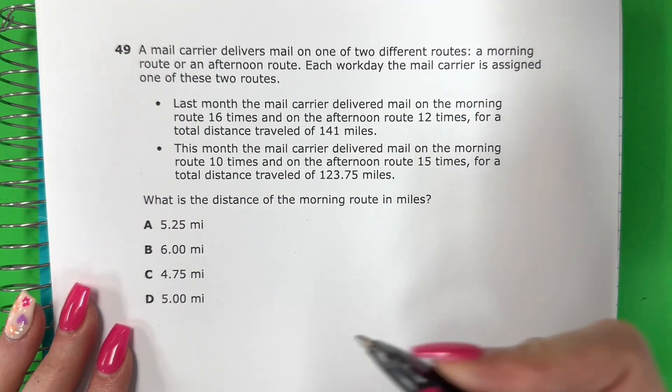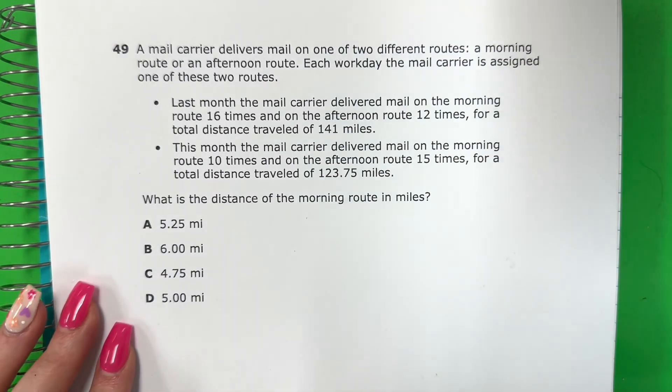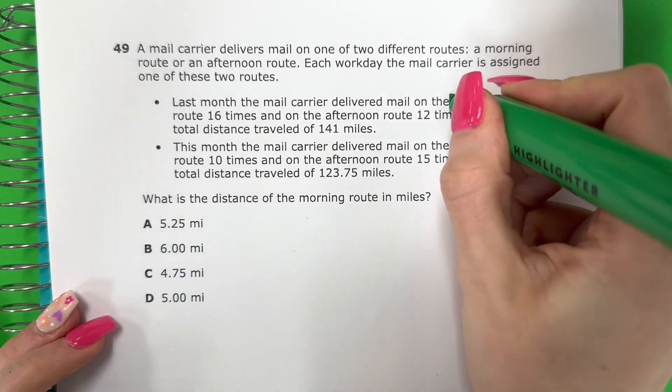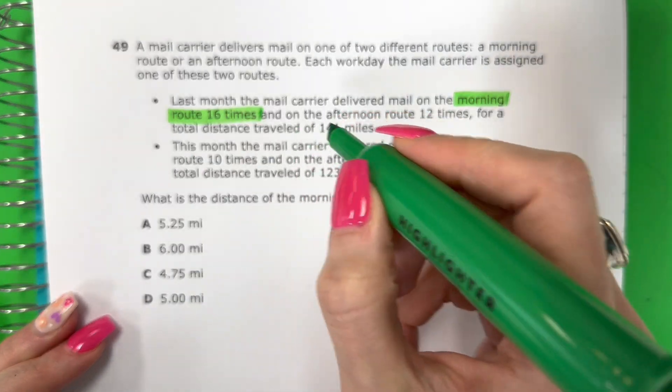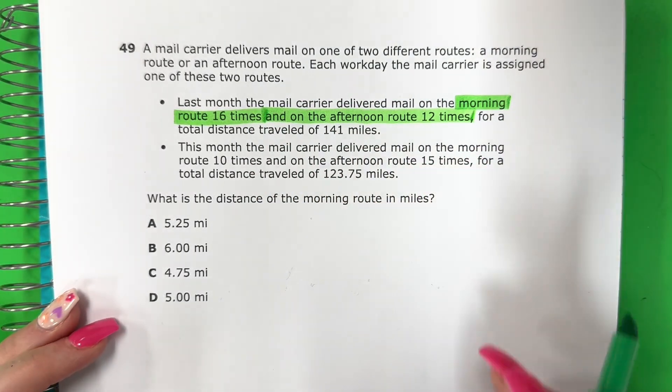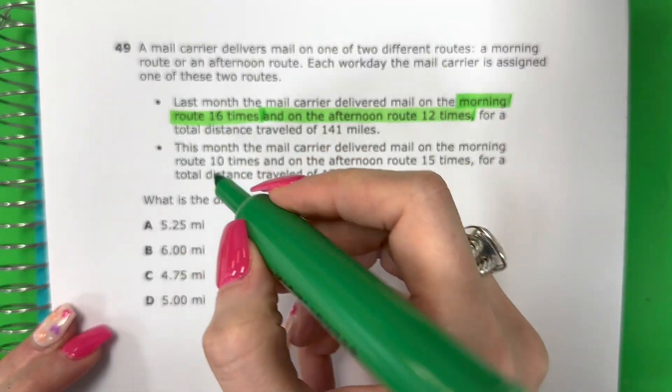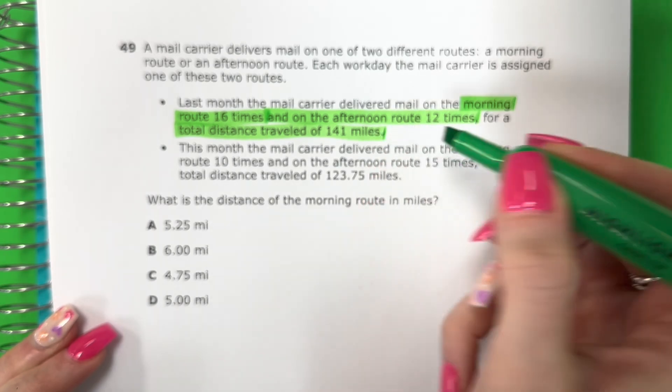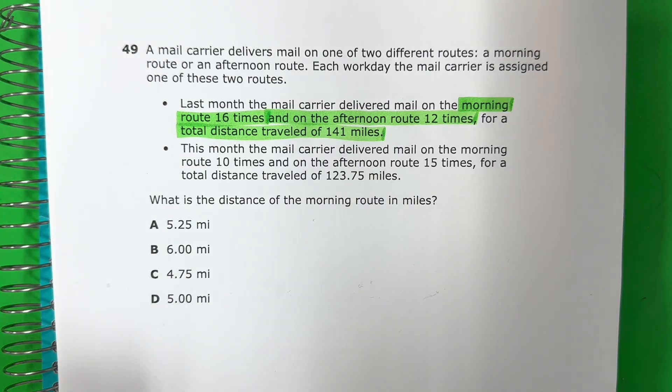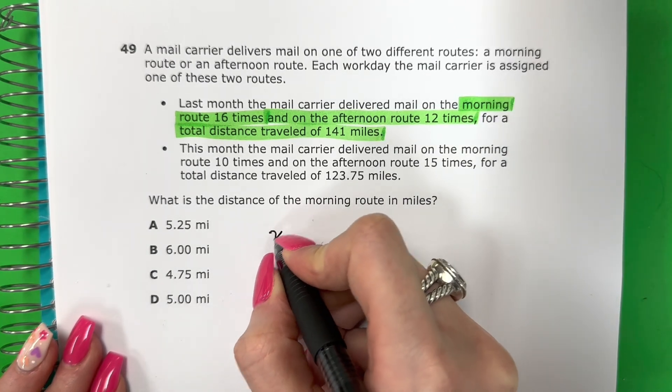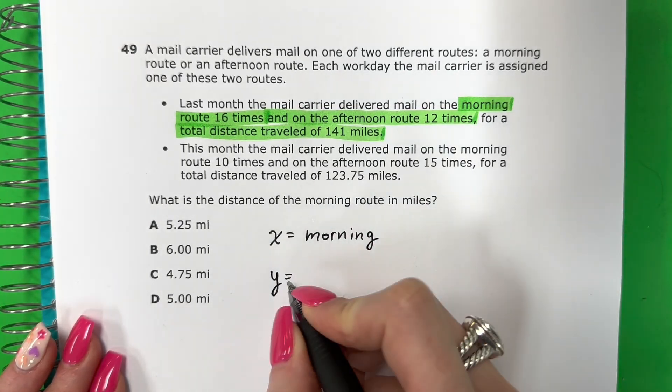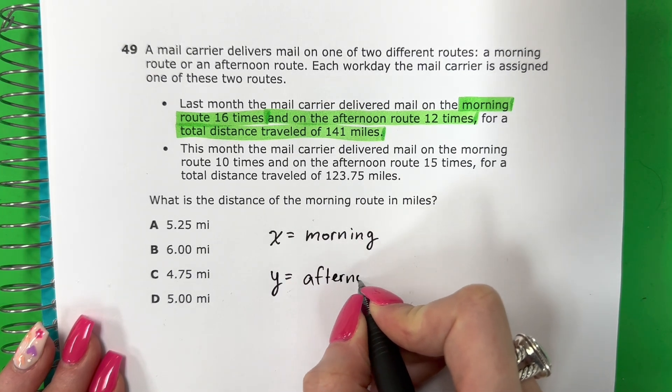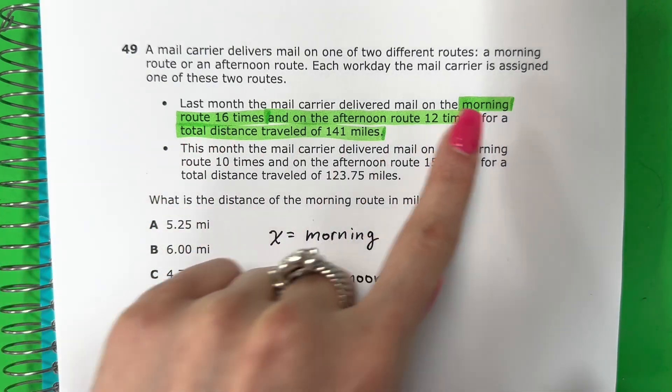So I have two different routes. Tengo dos rutas diferentes. I have the morning route, which is 16 times. Tengo la ruta de la mañana, 16 veces. And the afternoon route, 12 times. Y la ruta de la tarde, 12 veces. And the total distance is 141 miles. Y la distancia total es 141 millas. So I have two different routes. I'm going to make one of them X and one of them Y. Voy a hacer una X y una Y. X will be morning. X es mañana, por la mañana. And Y is the afternoon. Y la Y es por la tarde.